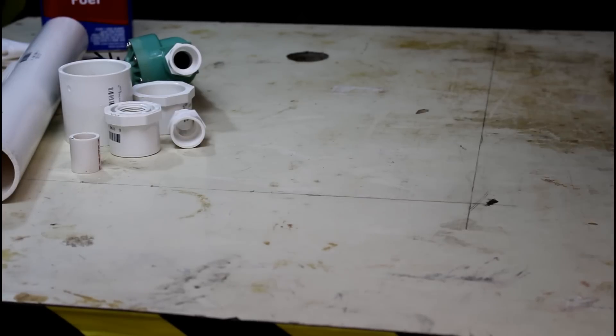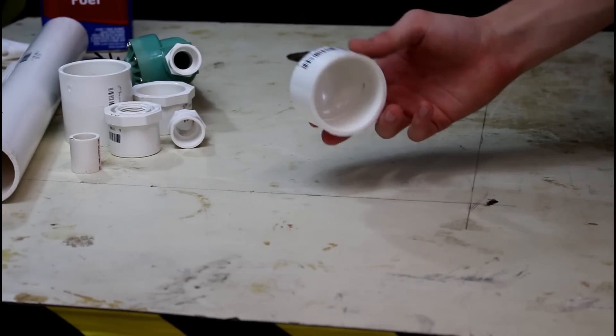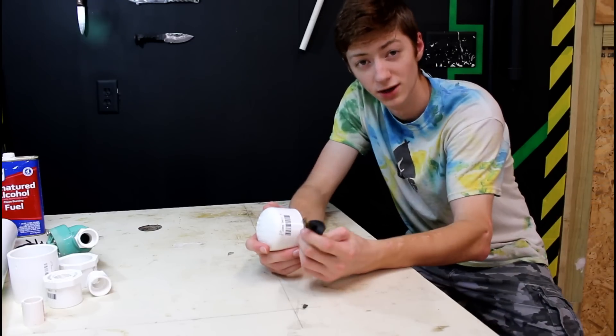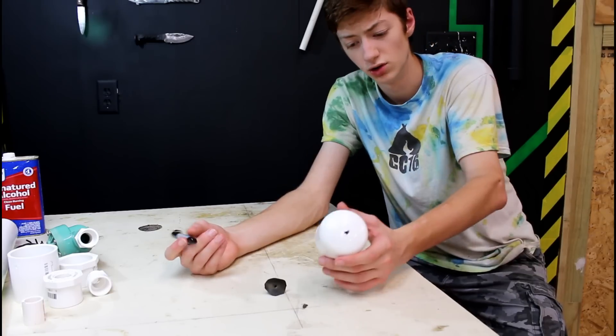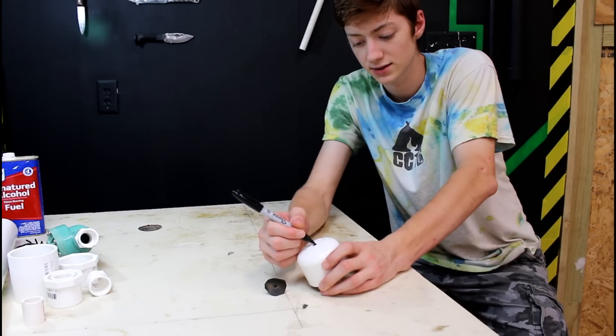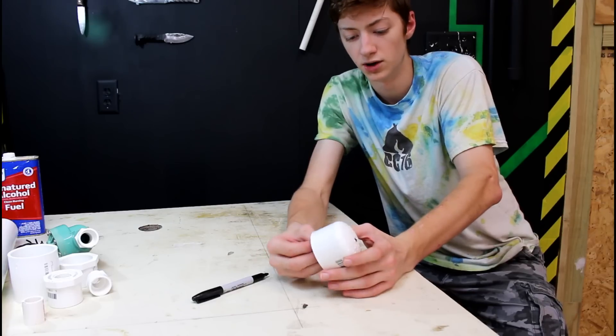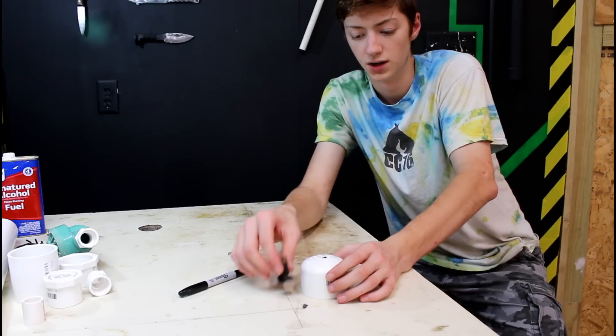The first thing to do is lay everything out and mark where the PVC needs to be cut. The next thing we need to do is deal with our end cap. The end cap is where I'm going to be putting my valve, so we're going to need to drill a hole right in the middle of it so we can slide this thing up from the bottom right to the top.